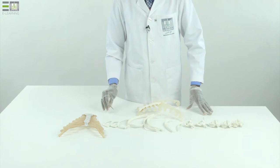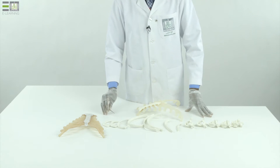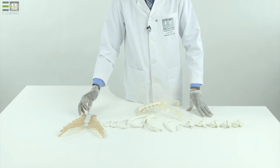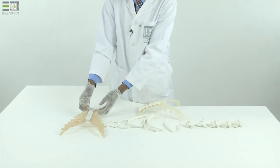This day we want to talk about the thoracic cage. We start with disarticulated bones. Our thoracic cage consists of the following bones.